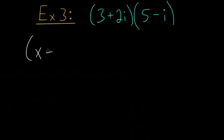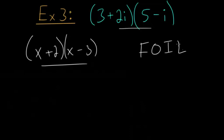So what I mean by that is if we had x plus 2 times x minus 3, we would multiply this the same way we multiplied this. And if it helps, you can use FOIL to kind of guide you.